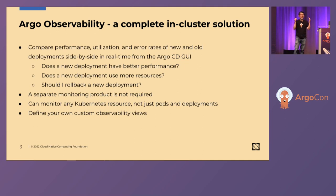Today when you go to the Argo CD UI and deploy an application, there is a little green heart icon. But that icon just indicates that Kubernetes thinks the pod is healthy — it doesn't mean your application is actually healthy. It could be returning errors, experiencing high latencies, or consuming excessive CPU and memory, and today you wouldn't know that by just looking at the Argo CD UI. Using this feature, you can now click on the metrics tab and see those metrics immediately after deployment.